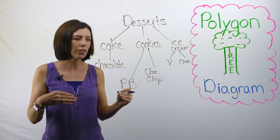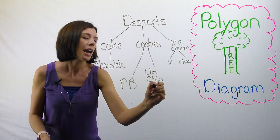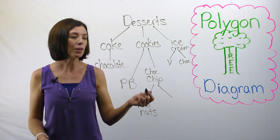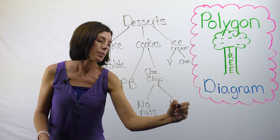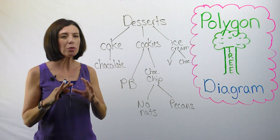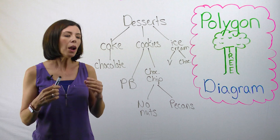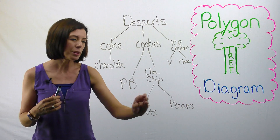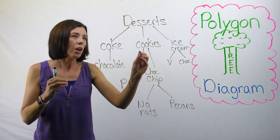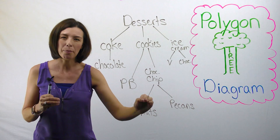I could keep going even further. Thinking about the chocolate chip cookies I have — I actually have two kinds: ones with no nuts, and chocolate chip cookies with pecans. Here's where people get confused with tree diagrams, especially when we start thinking about them in reference to your polygons and quadrilaterals. The stuff down here at the bottom is the most specific — desserts that are cookies, that are chocolate chip, that have pecans — this is the very bottom of my chart.